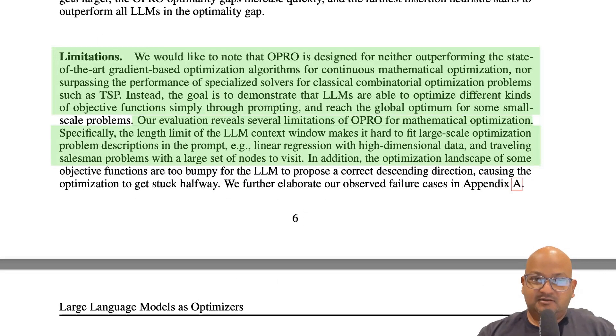Right at the outset, you might ask, why do we even want to use LLMs for such optimization problems? Especially problems that already have well understood solutions. Linear regression, of course, has a neat closed form solution. Traveling salesman is NP hard, yes, but it has a number of heuristic solutions that come pretty close to optimal in tractable time.